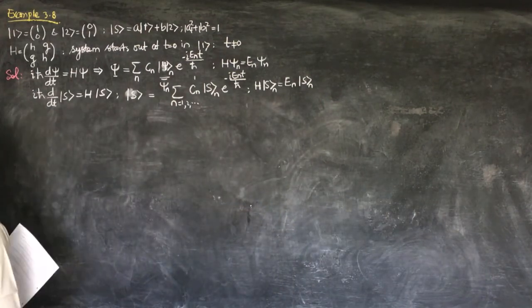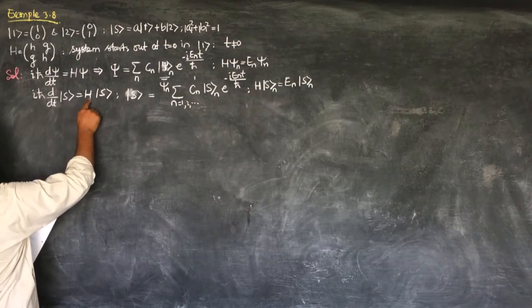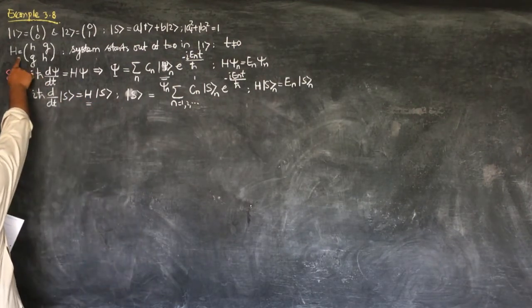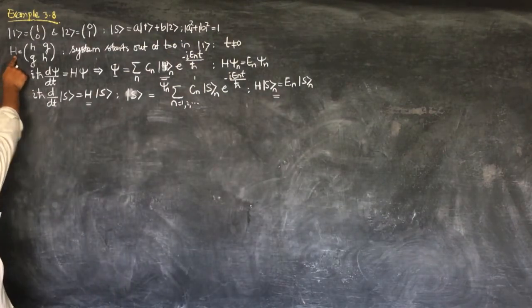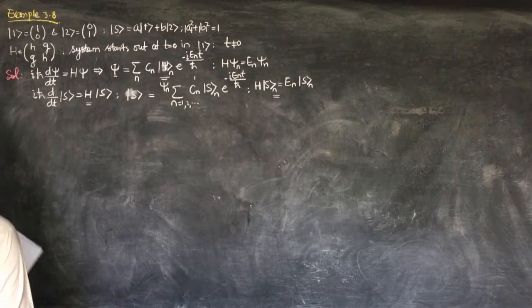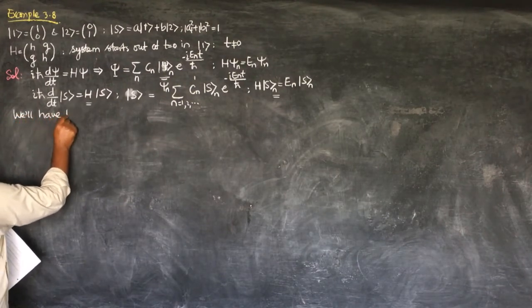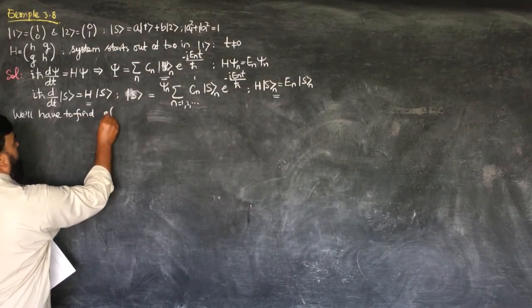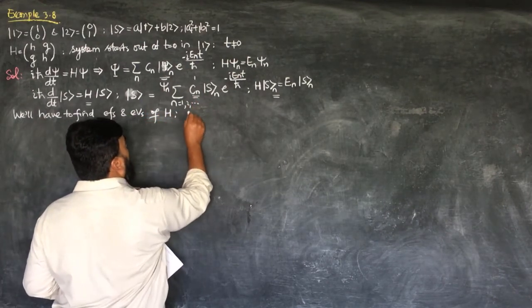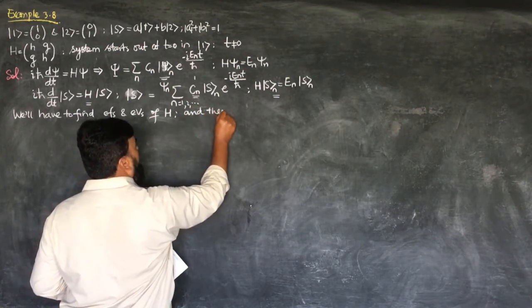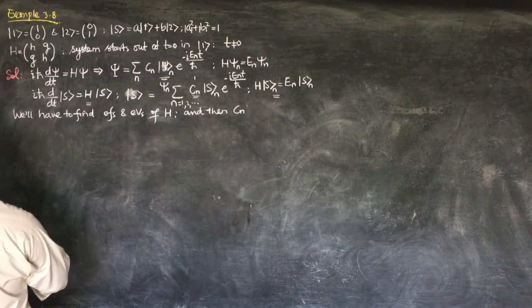To find the energies we need to find the eigenvalues and eigenfunctions of H. We use the general formula: det(H − E·I) = 0, where I is the 2×2 identity matrix. So we compute the determinant of [[h−E, g], [g, h−E]] = 0.